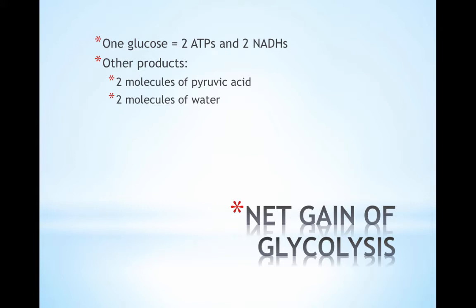As a net gain from glycolysis, we have two ATPs and two NADHs that are carrying the energy from glucose. But there are other products: two pyruvic acids and two water molecules.